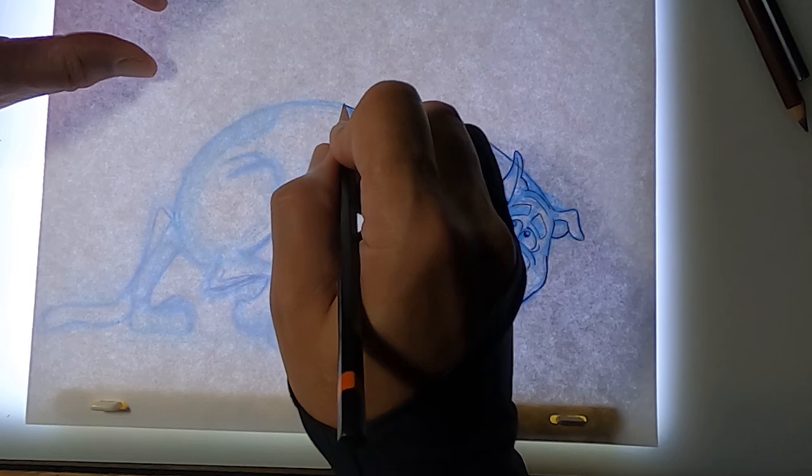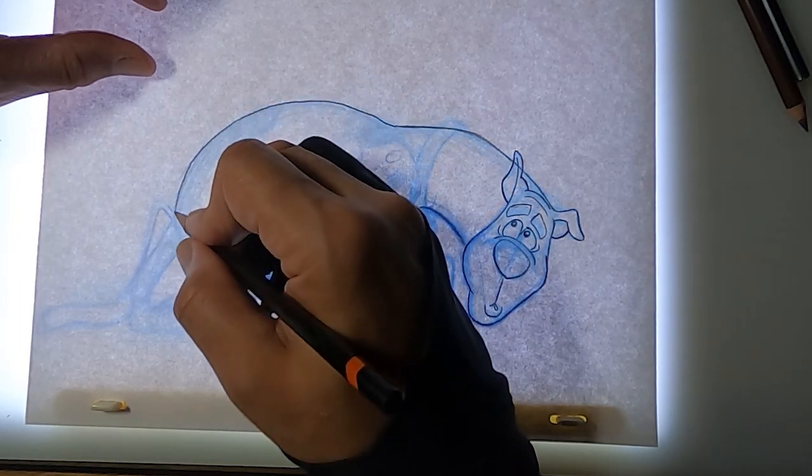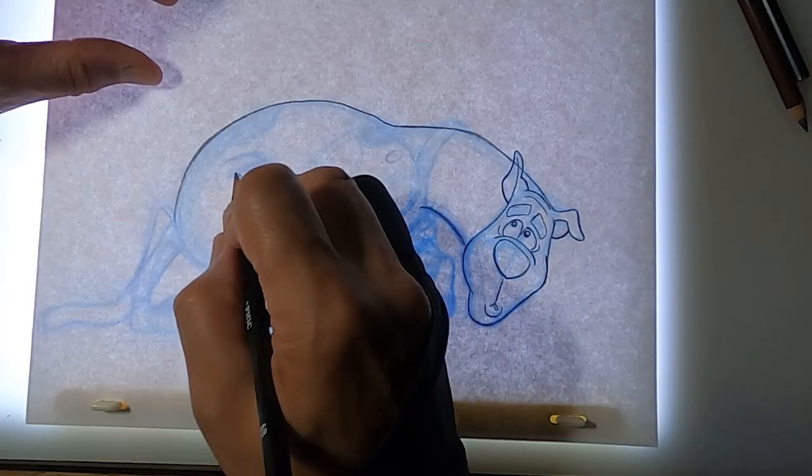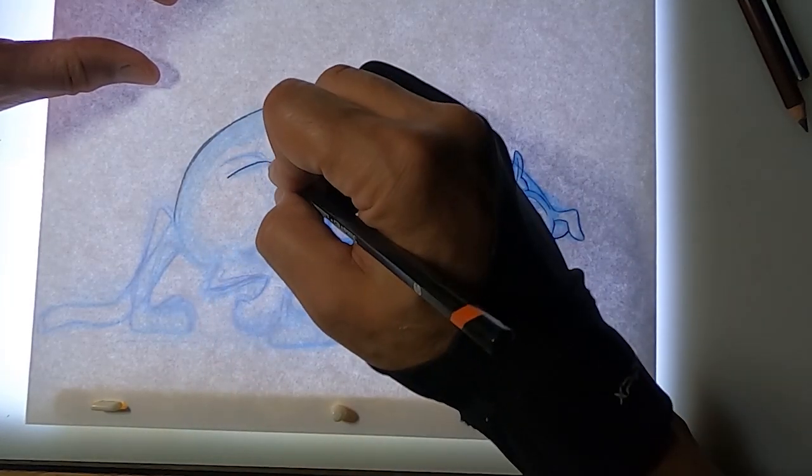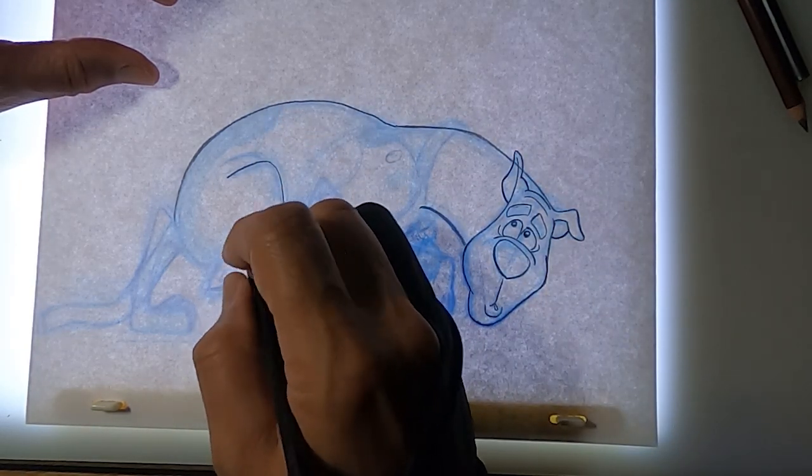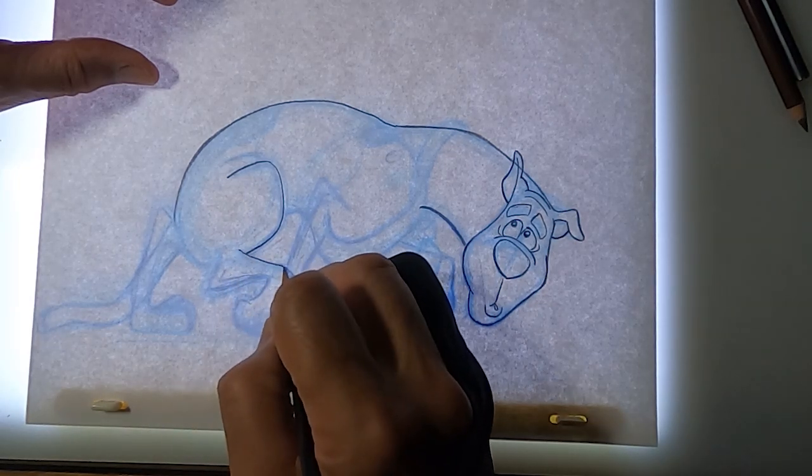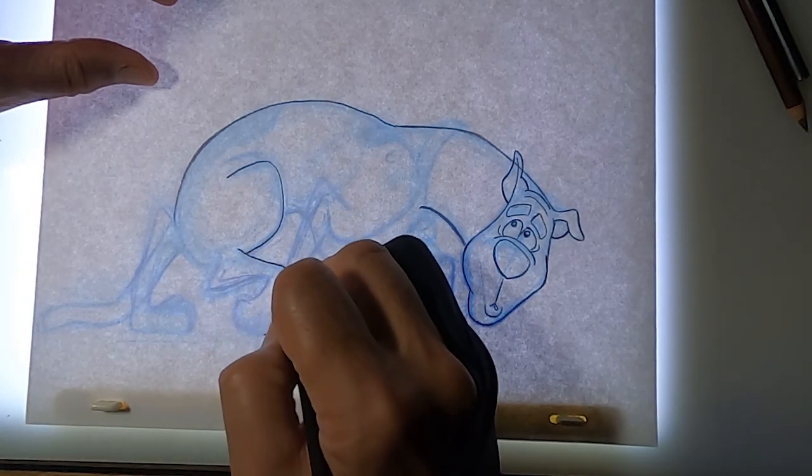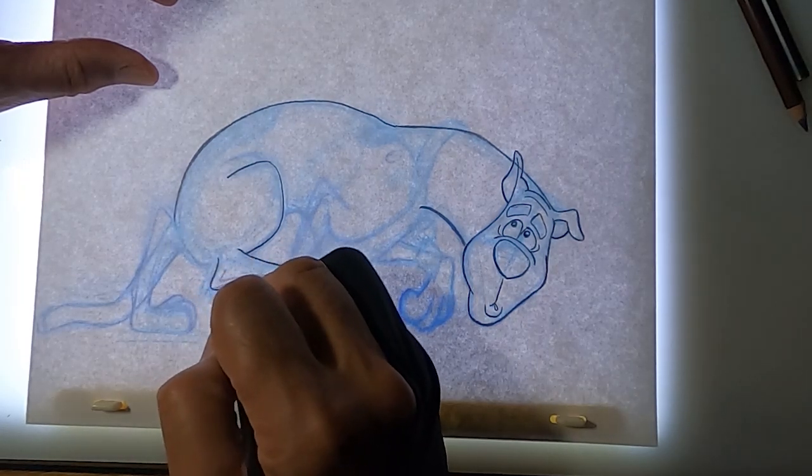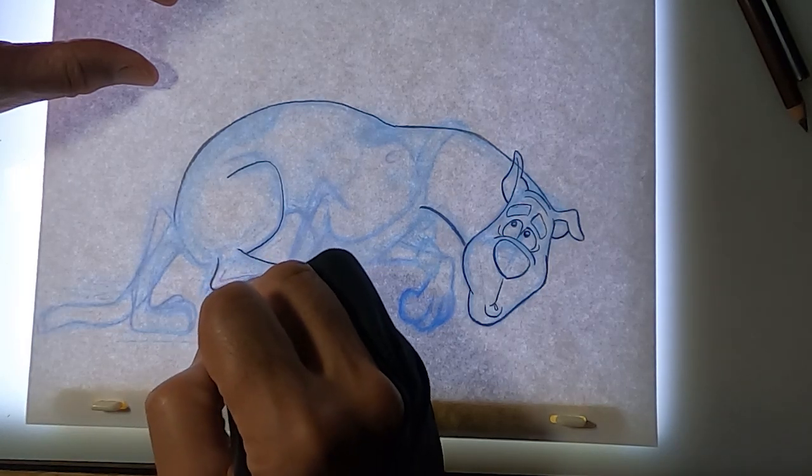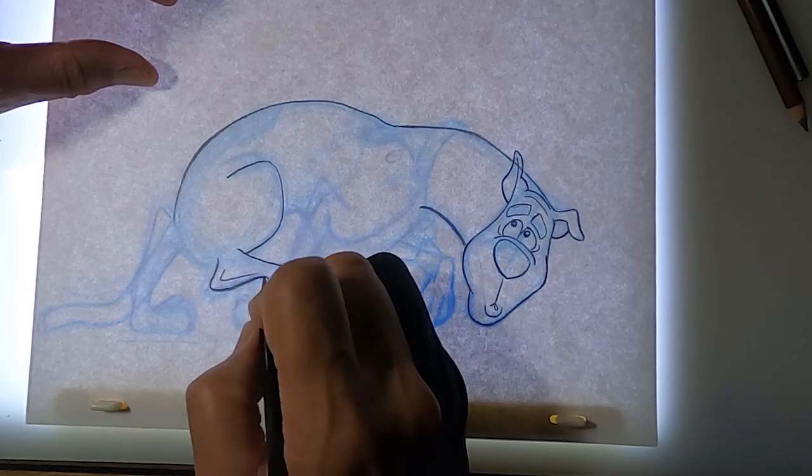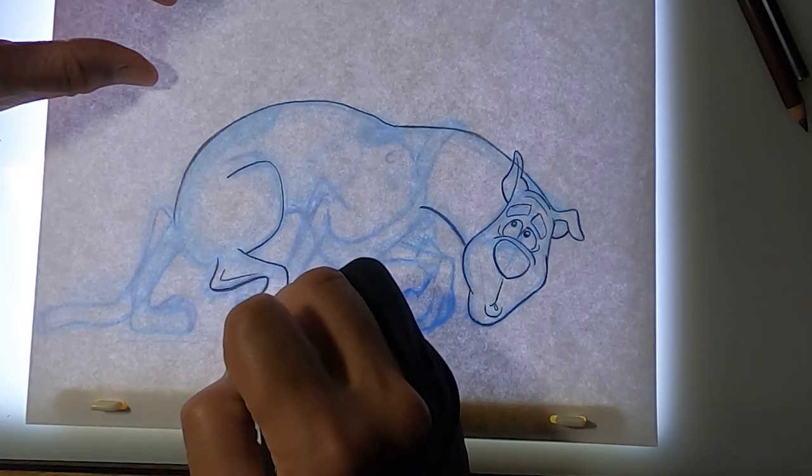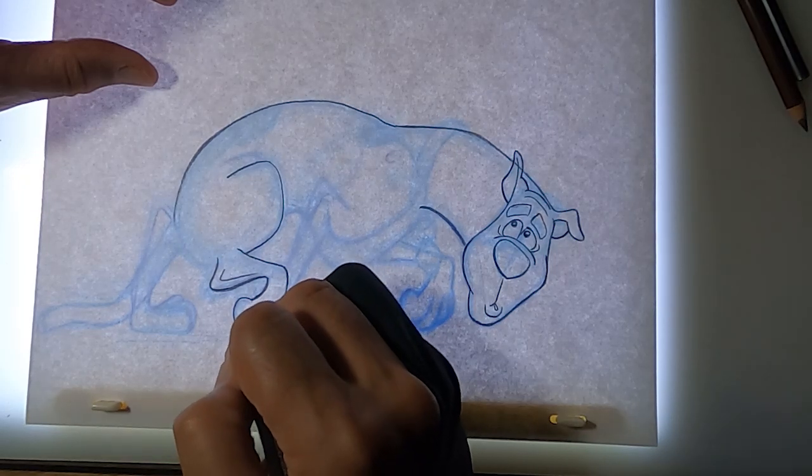So let's continue on with the body. Nice curve all the way around like that. I'm taking liberties with what's on the model sheet just because I want to. And put this line on around. Now his leg comes out from here. And it comes down. So this line should be a little bit heavier. And then we can come up and around like this. And this line should be heavier because it's on the bottom. And then it's a nice curve inside. And around like that.